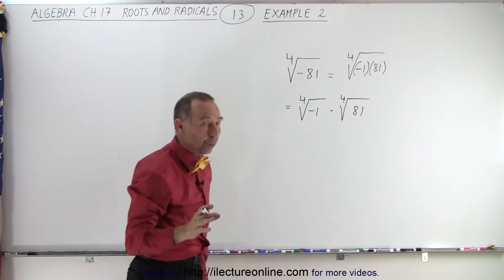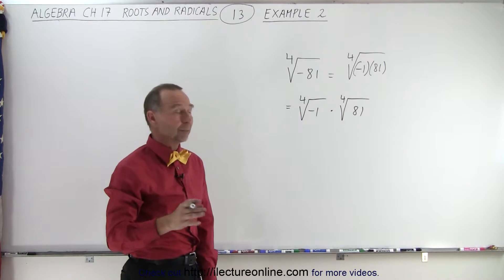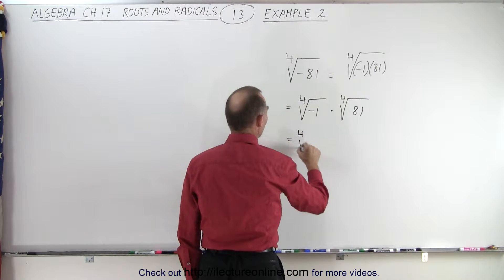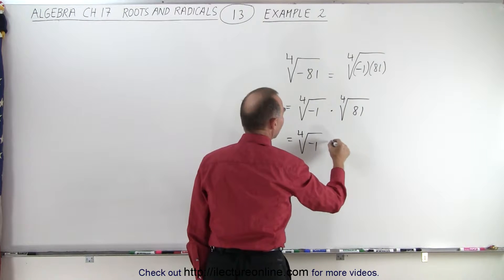Now the fourth root of 81, that we can handle because we know that 3 to the fourth power is 81. So this would be the fourth root of negative 1 times 3.